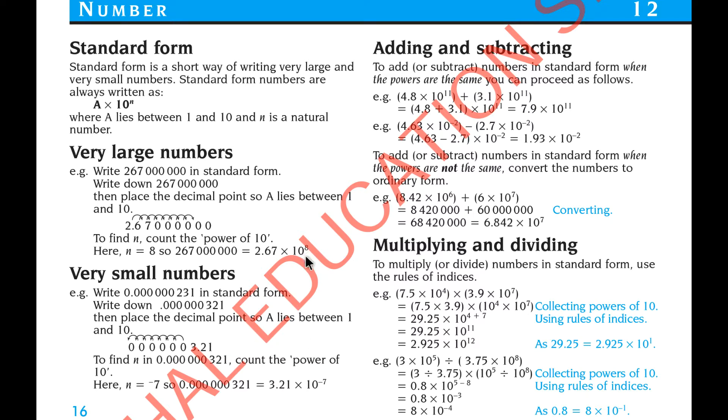So we write 3.21 multiplied 10 to the power minus 7. Here plus 8 means it's going backward, this is going frontwards. So therefore here N equals minus 7. So here this is the ordinary format, this is the standard format.